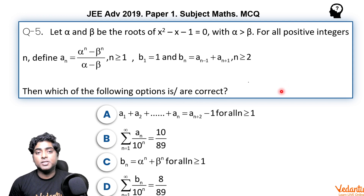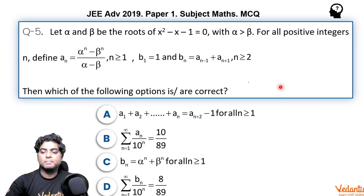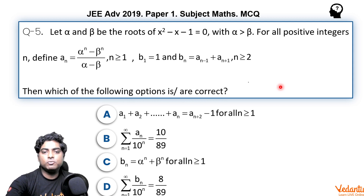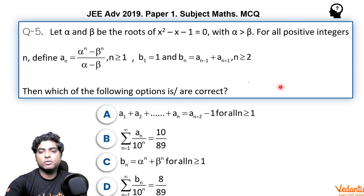Coming to the first option: A says a_1 + a_2 + ... + a_n = a_(n+2) - 1 for all n greater than 1. We have to check whether this is correct or not.